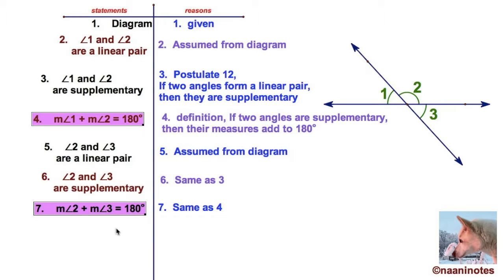Take lines four and line seven. 1 and 2 are equal to 180. I can replace the 180 there with the measure of angle 2 and the measure of angle 3. And what I come up with is this statement: the measure of angle 1 plus the measure of angle 2 equals the measure of angle 2 plus the measure of angle 3.